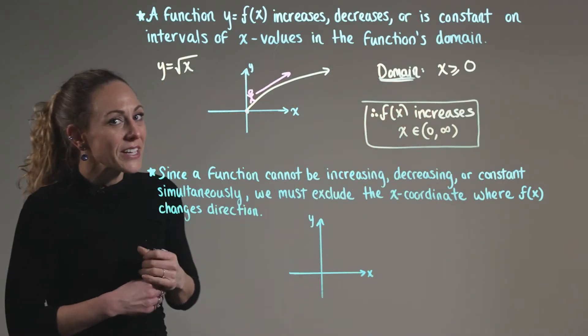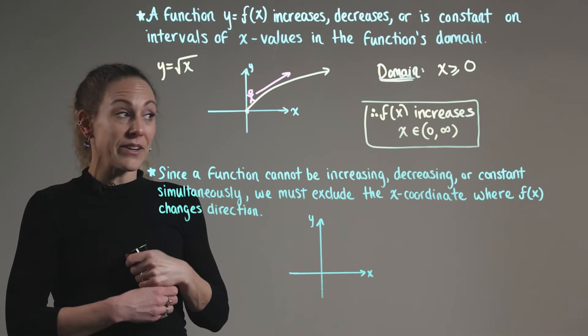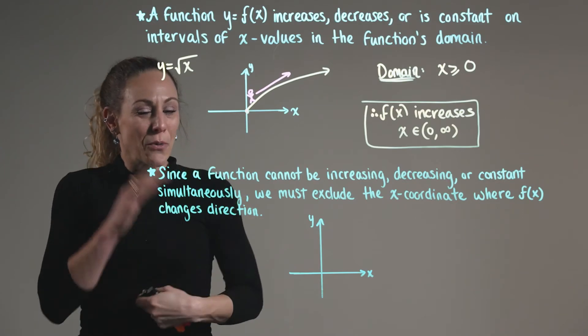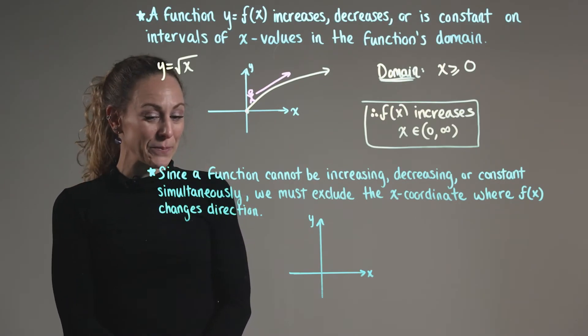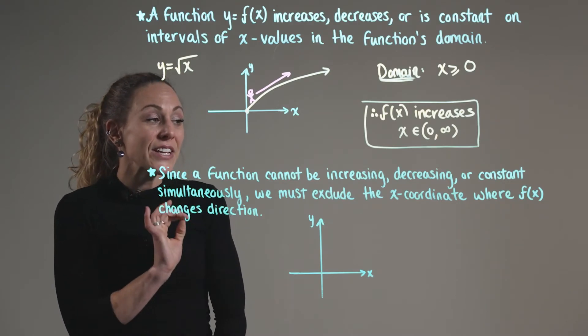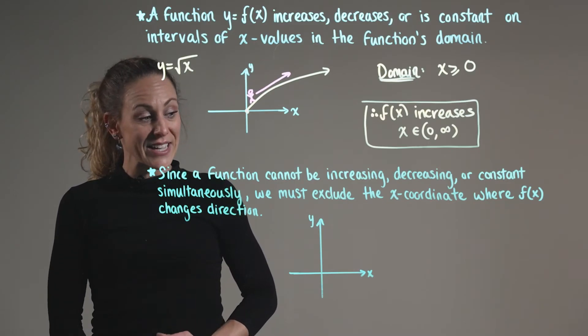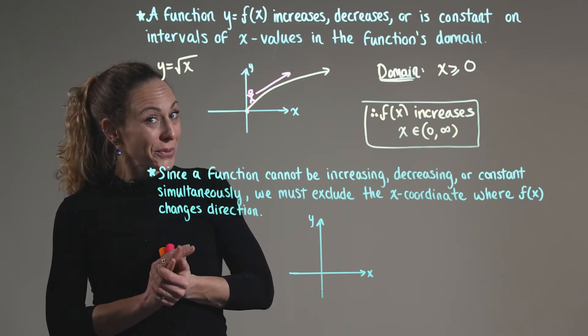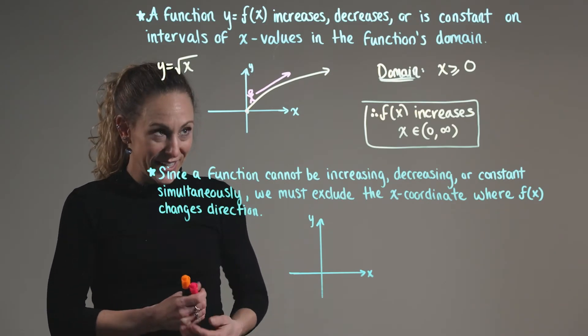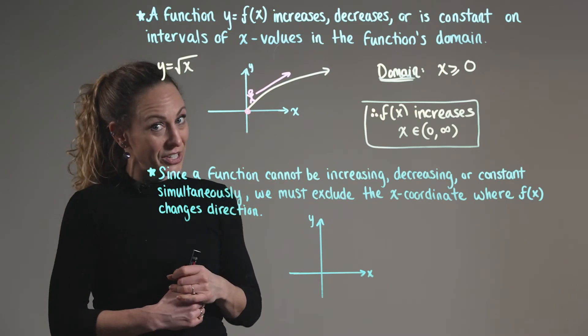So you may be thinking to yourself, wait a second, why did we exclude the endpoint of the domain? Why aren't we including zero? And that's a great question, which leads us to our second point, which tells us that since a function cannot be increasing, decreasing, or constant simultaneously, we must exclude the x coordinate where a function is changing direction. And that's what's happening here. This is a point where the function is changing direction.